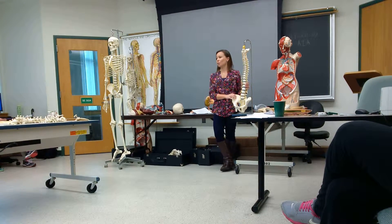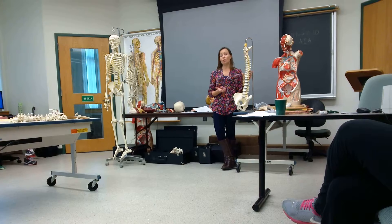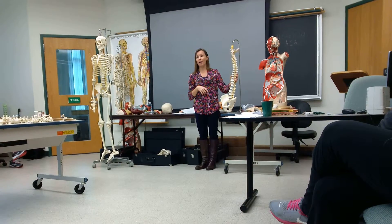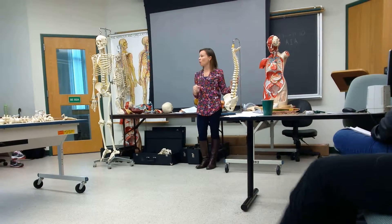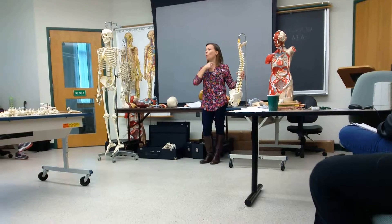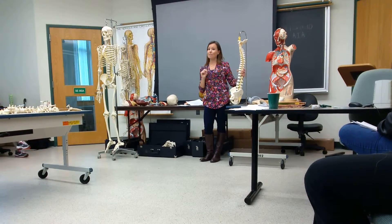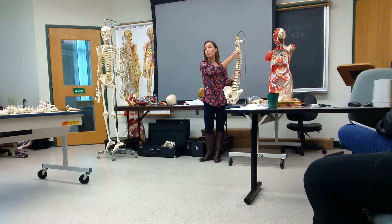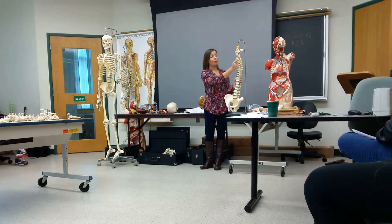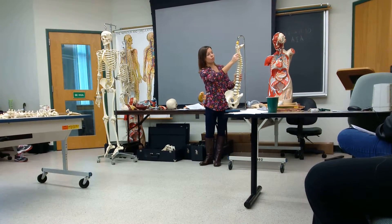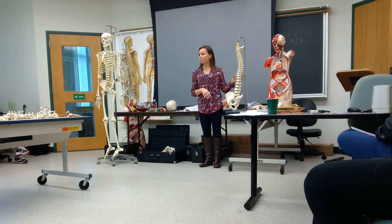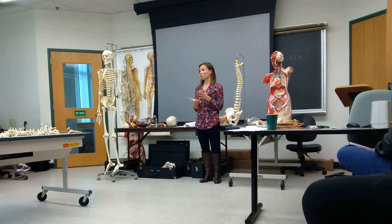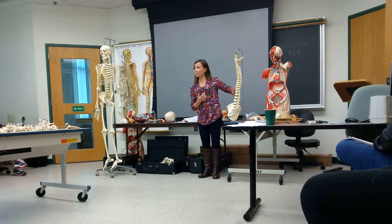You also have the transverse foramen on the list. That is the hole that goes through the transverse process and it's only in the cervical vertebrae. Going through those two holes are the vertebral arteries, which go up the neck and into the brain to supply blood to the brain. Since I just have one question from that section, I'll most likely just choose a group of spinal nerves to ask you.